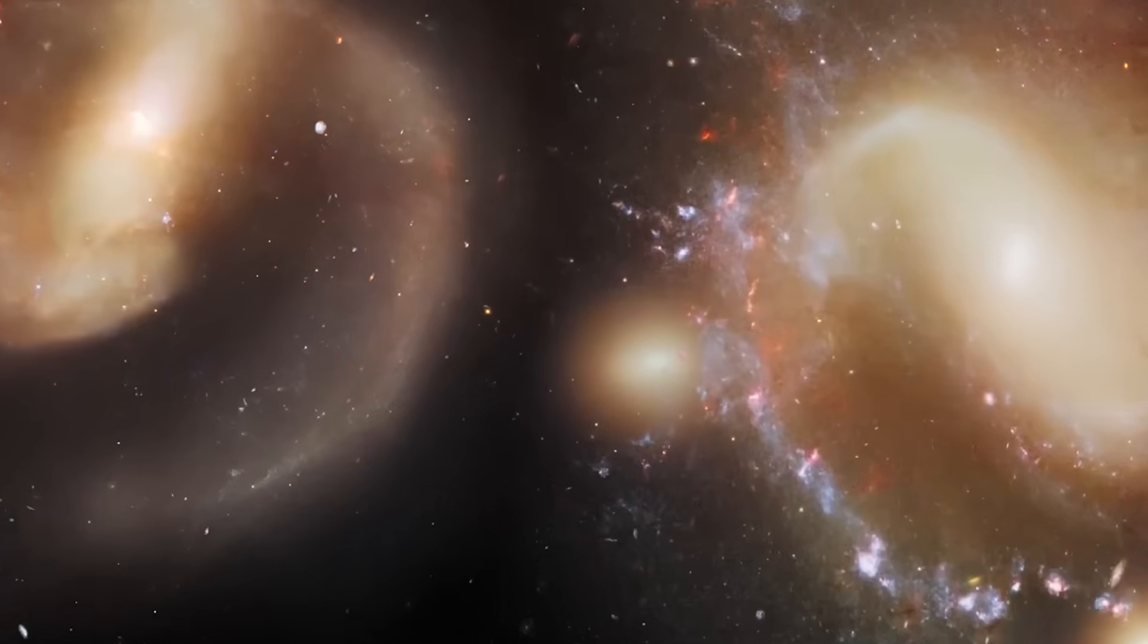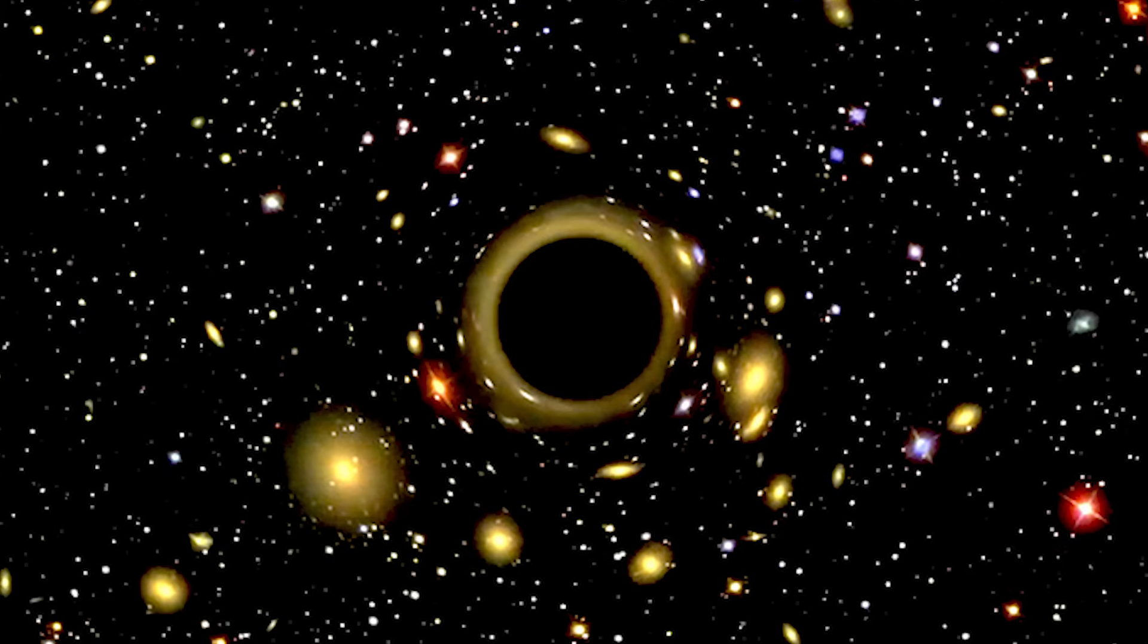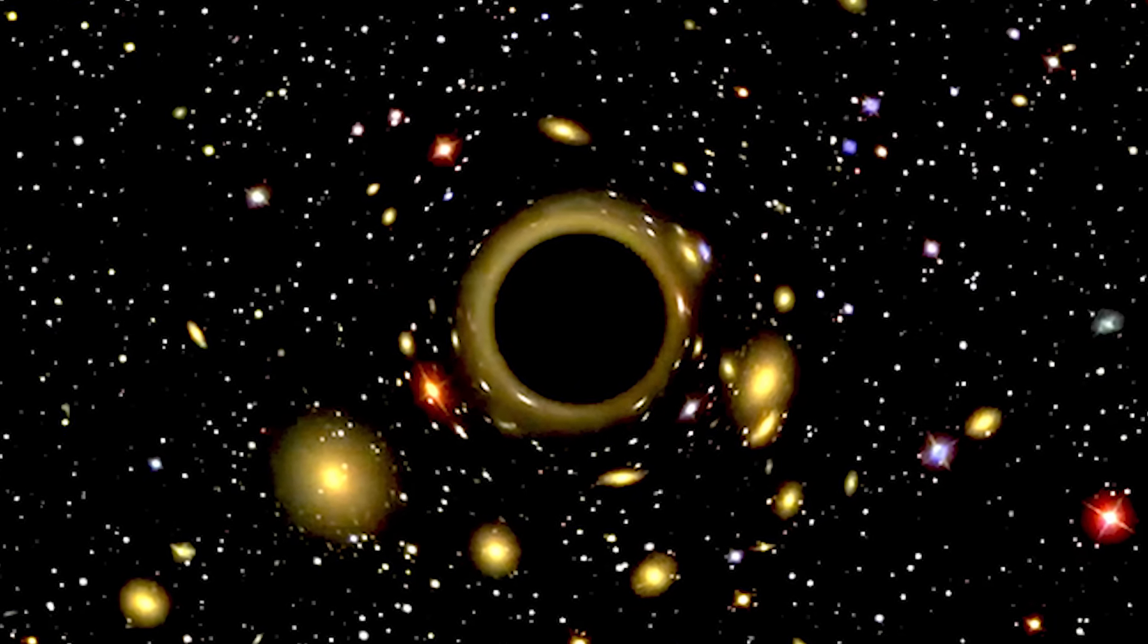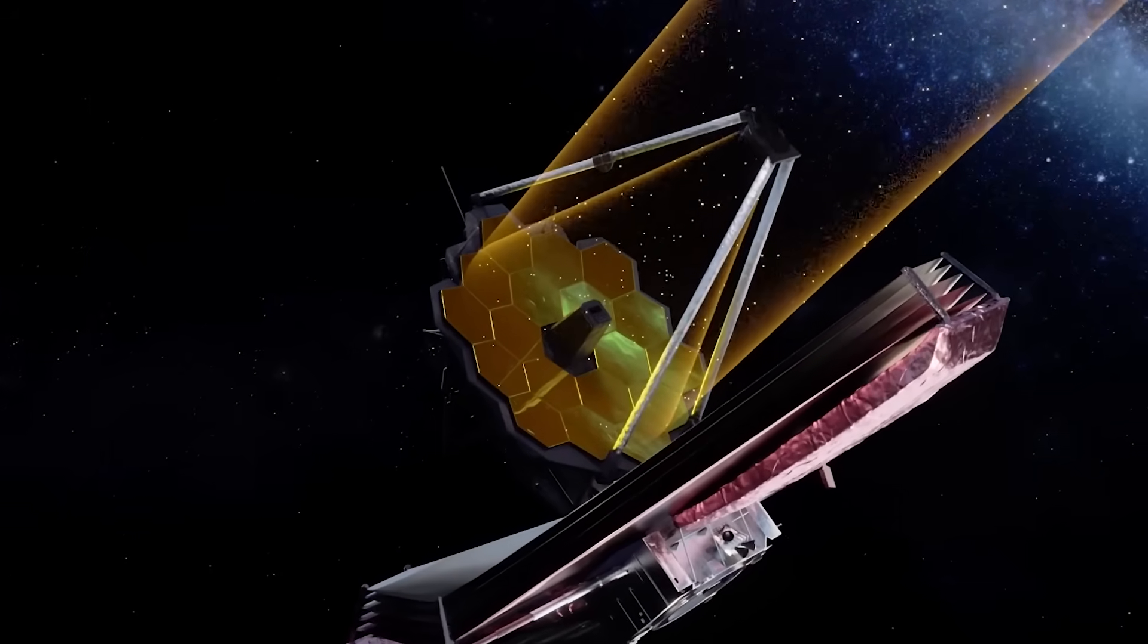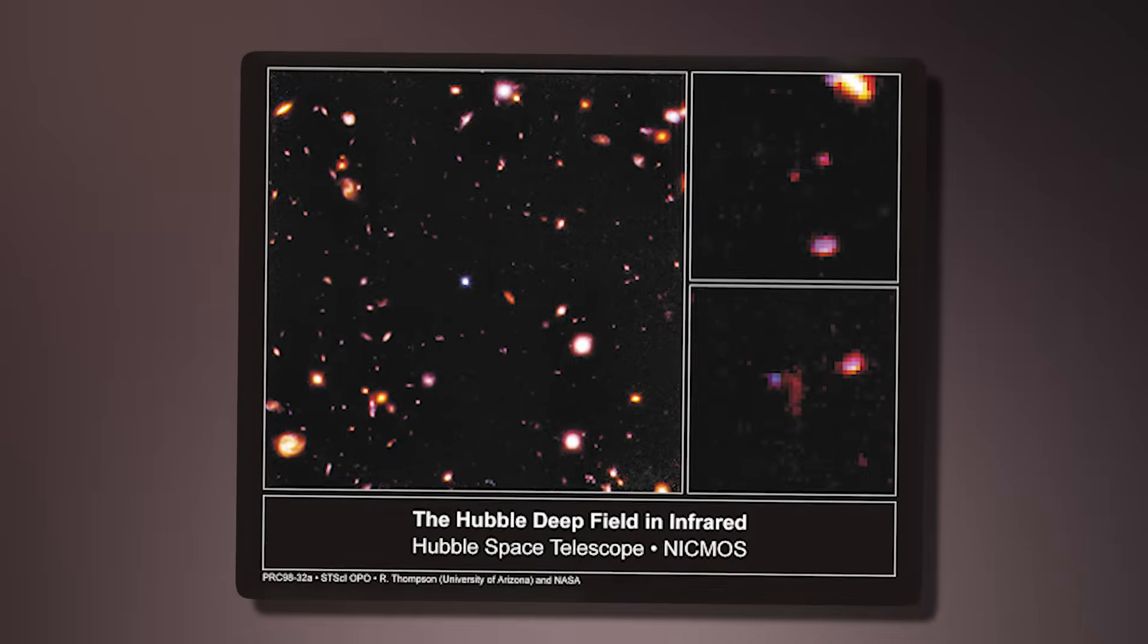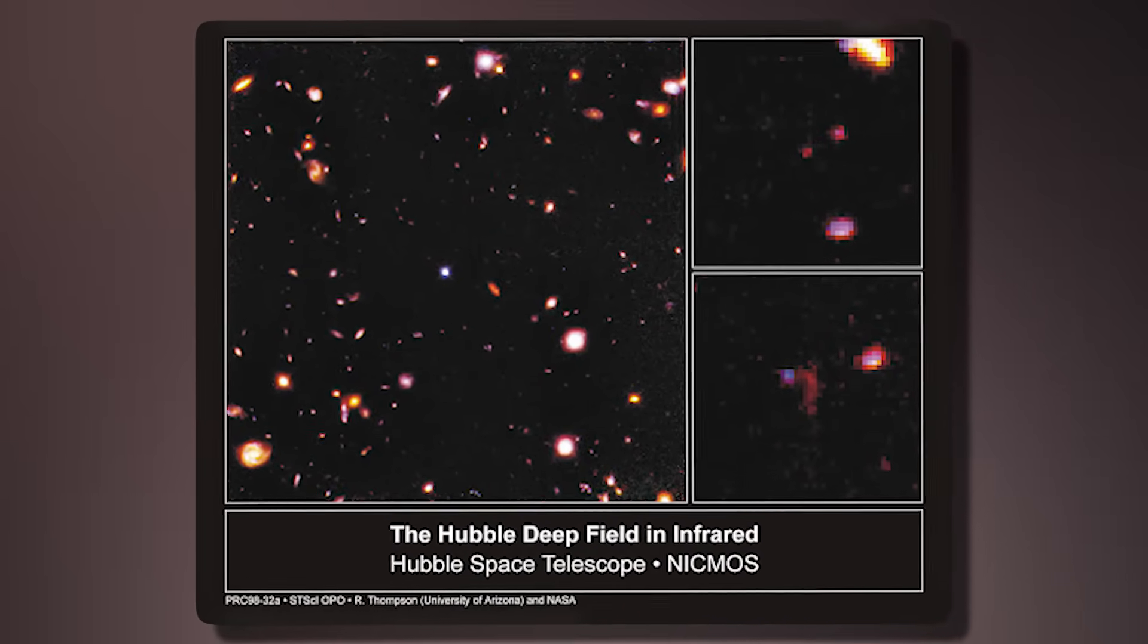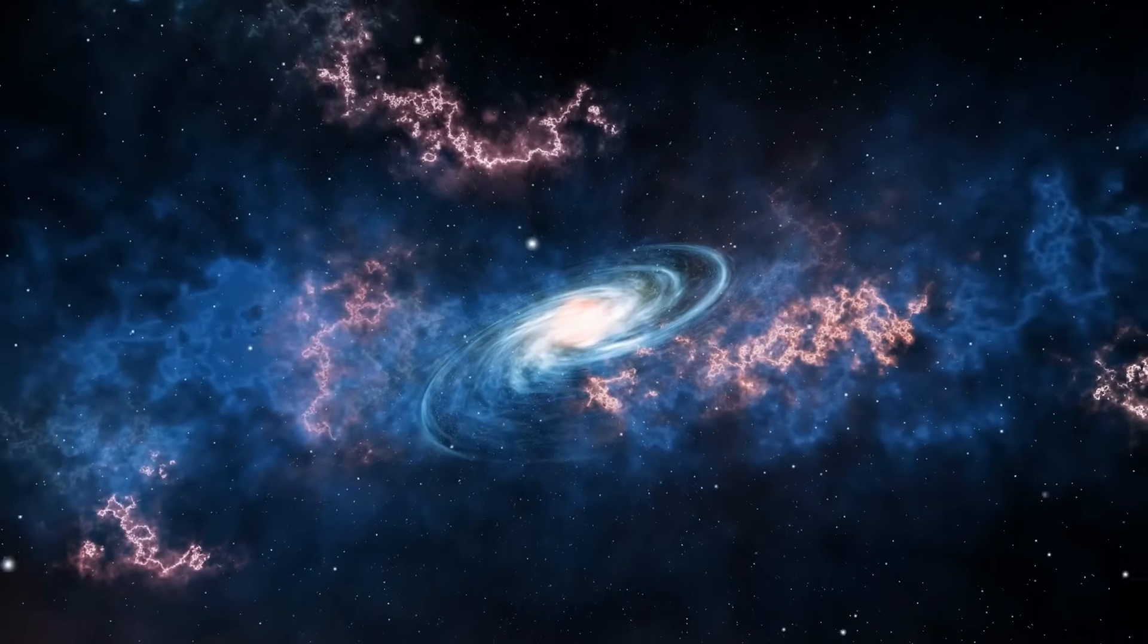This suggests that either black holes formed directly from the collapse of massive gas clouds, bypassing stellar birth, or that unknown processes allowed them to grow exponentially faster than expected. Perhaps most astonishing is what Webb saw beyond even these ancient galaxies, an ambient diffuse glow of infrared radiation with no identifiable source.